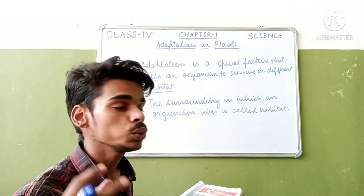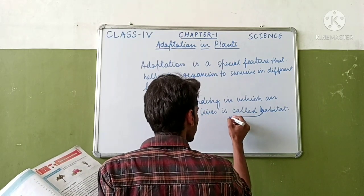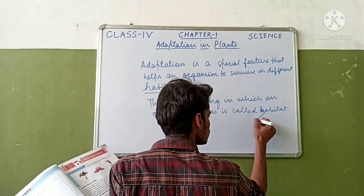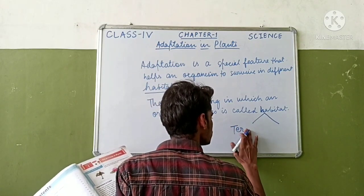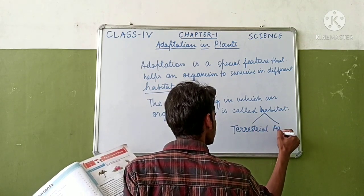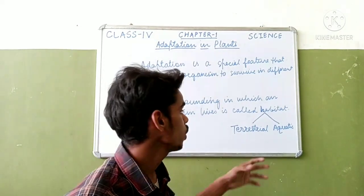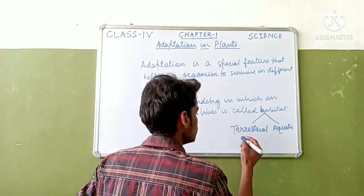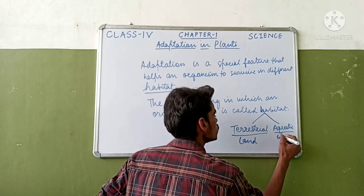On the basis of habitat, organisms are classified into two categories: first is terrestrial and second is aquatic. Terrestrial organisms live on land. Aquatic organisms live in water.